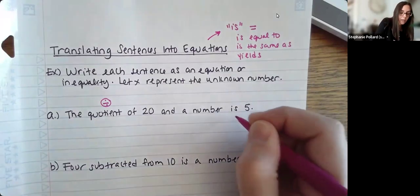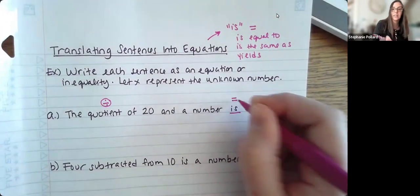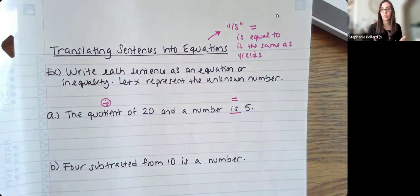And then I see another key word here is, and again, if it's just an is, that is a flag that that's going to be an equal sign.